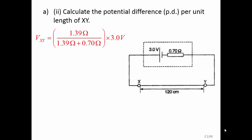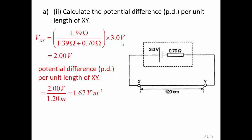The potential difference between X and Y is given by the potential divider rule: the resistance across XY divided by total resistance, which includes the internal resistance of the battery, multiplied by the emf of the battery. So we get the potential difference between X and Y as 2 volts. The potential difference per unit length, therefore, will be given by the potential difference divided by total length, which is 1.67 volts per meter.